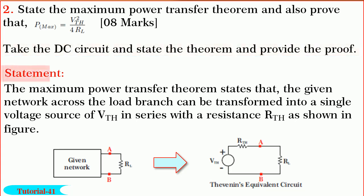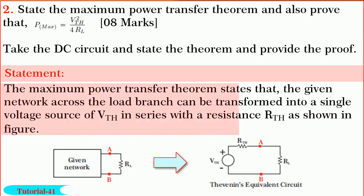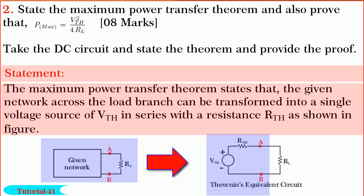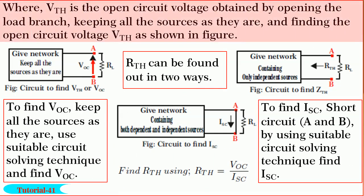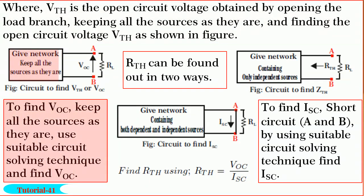So first let us state the theorem. The maximum power transfer theorem states that the given network across the load branch can be transformed into a single voltage source V_th in series with resistance R_th as shown in figure. Where V_th is the open circuit voltage VOC, obtained by opening the load branch, keeping all sources as they are, and finding the open circuit voltage as shown in figure. To find VOC, use a suitable circuit solving technique.